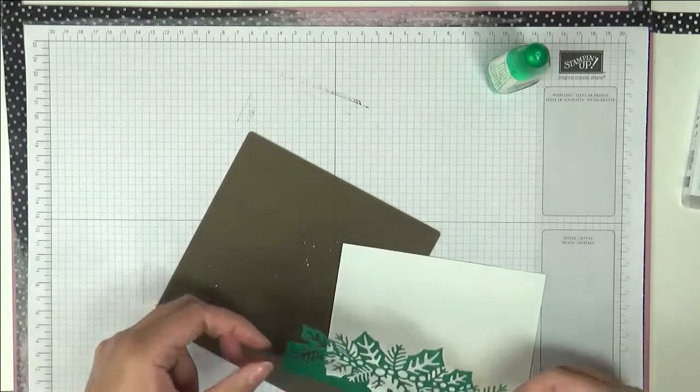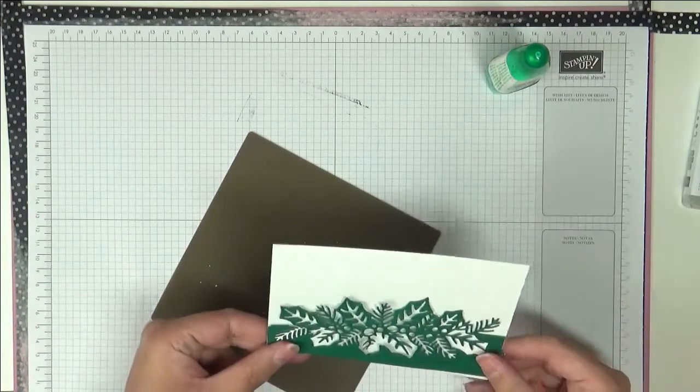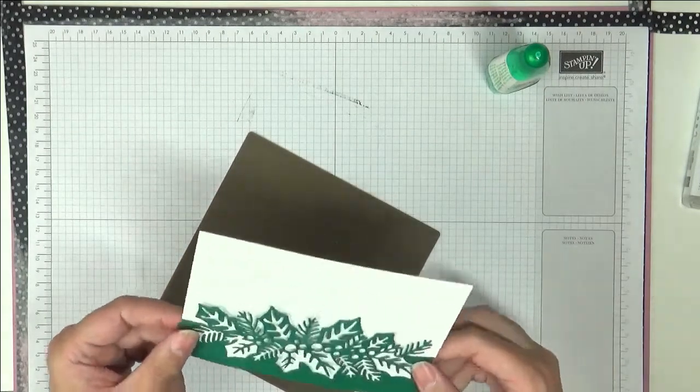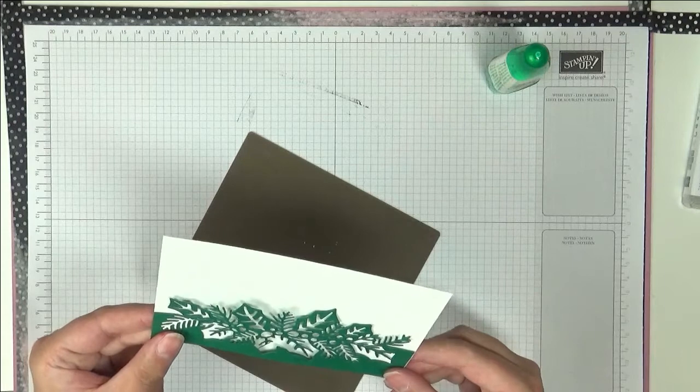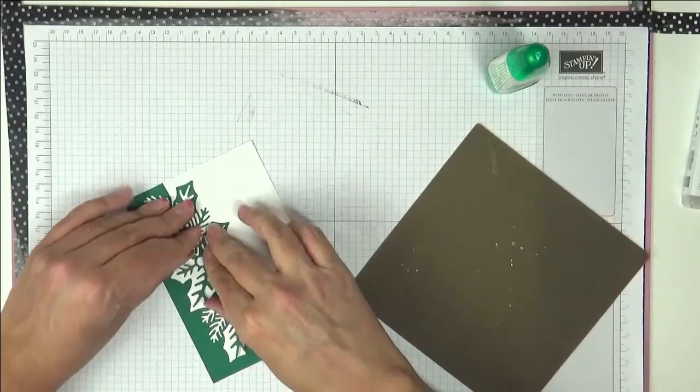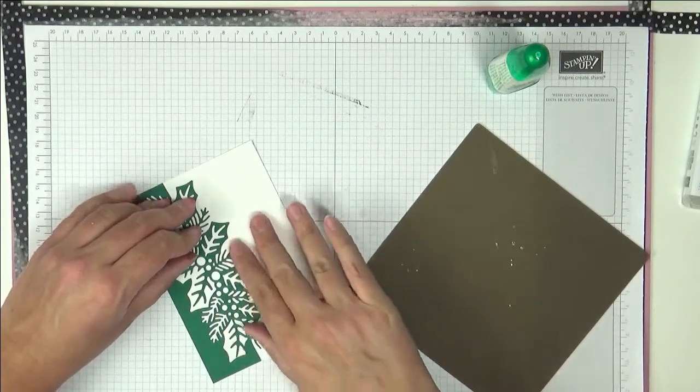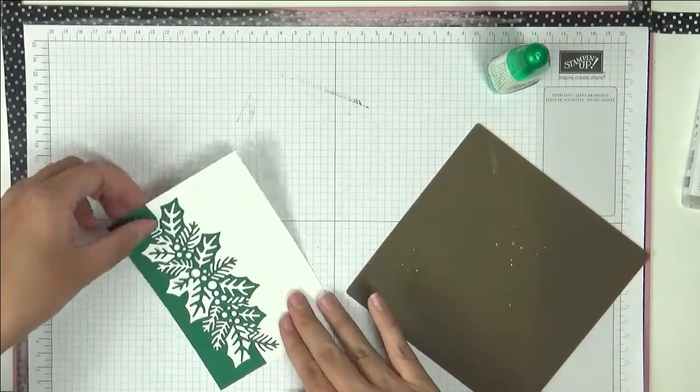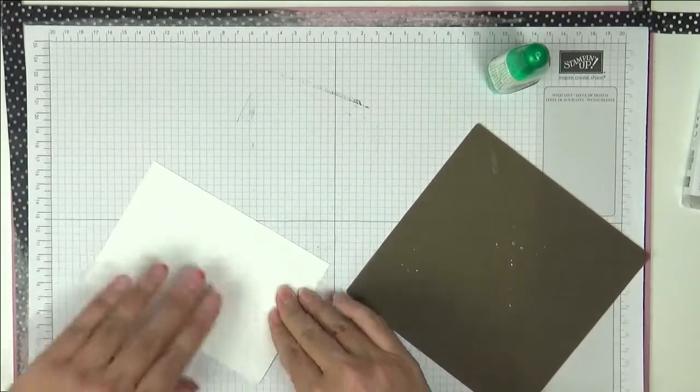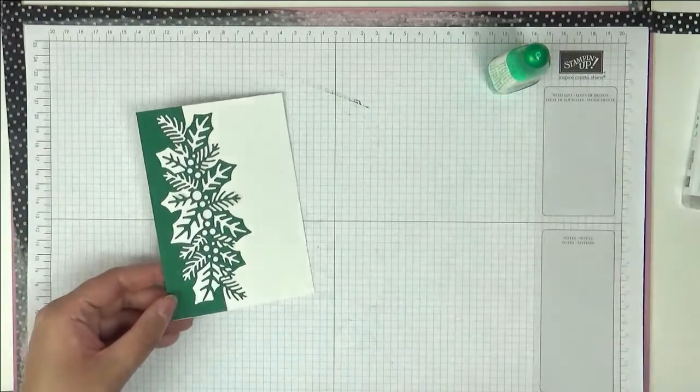So now we're just going to put this on our piece of Whisper White and line it up. This is why it's also good to have the Tombow, because it gives you the little wiggle room to line everything up. And then we're just going to press it down. If you want to press a bit harder, you can just do it from the reverse maybe. So let's put that away for now.